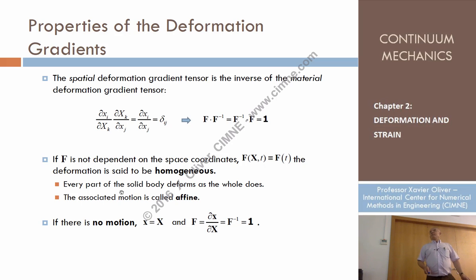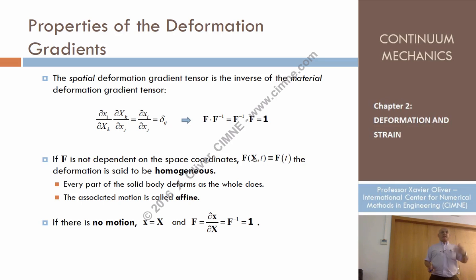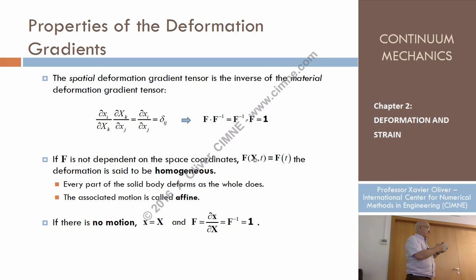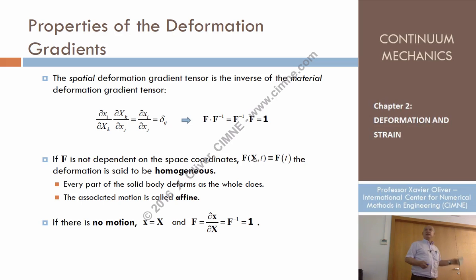When F doesn't depend on X, that means the relative motion — the relative position of all particles — is the same everywhere, throughout all particles. That doesn't mean there is no deformation; it means the deformation is constant everywhere — the deformation is homogeneous.